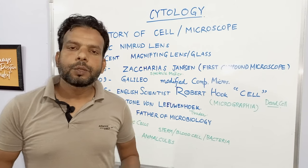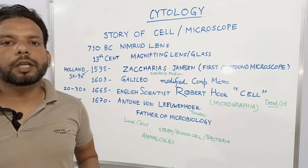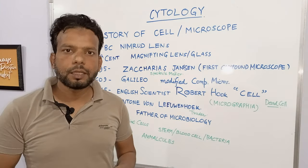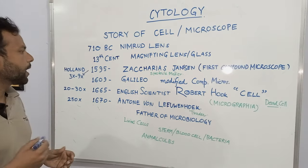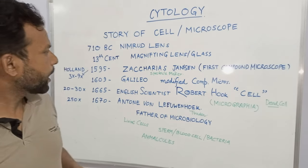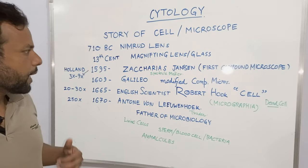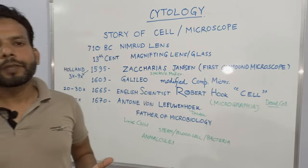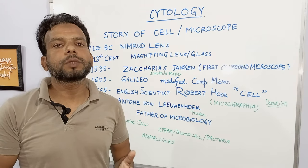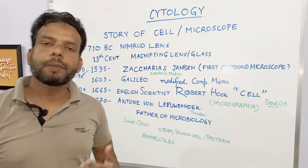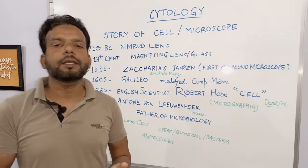It took some further 200 to 300 years to develop the compound microscope. The first compound microscope was developed in 1595 by Zacharias Janssen. Zacharias Janssen was a spectacle maker and, with his father, they were able to develop the compound microscope. The compound microscope is a microscope where two or more lenses are used to magnify any object.